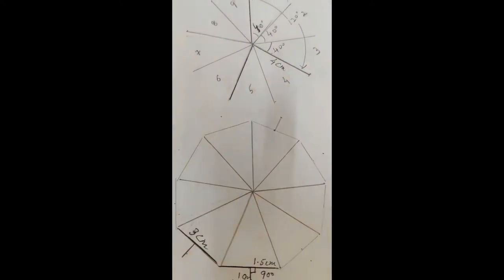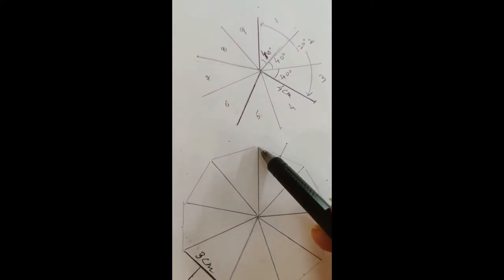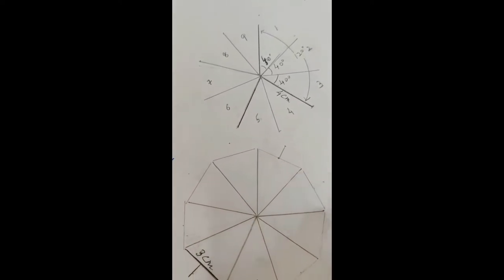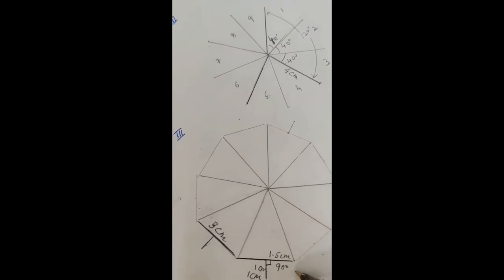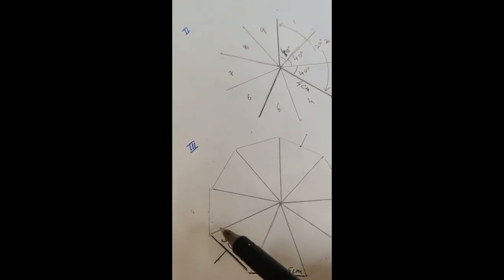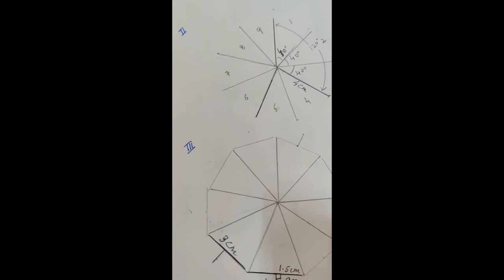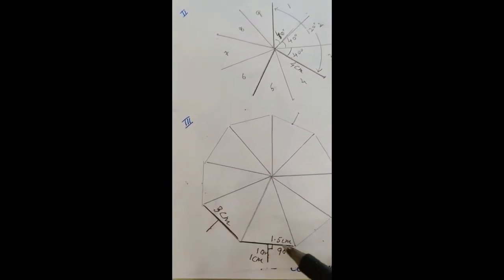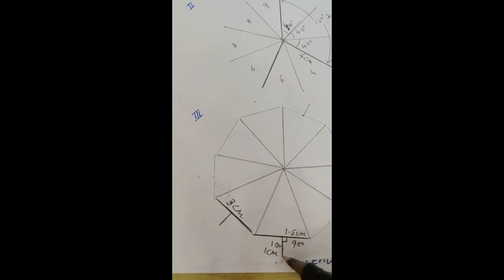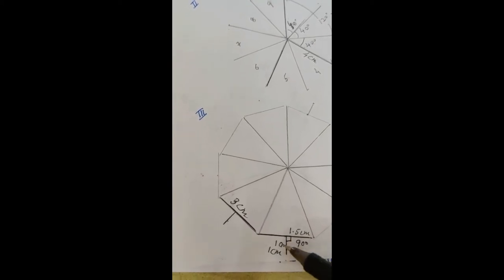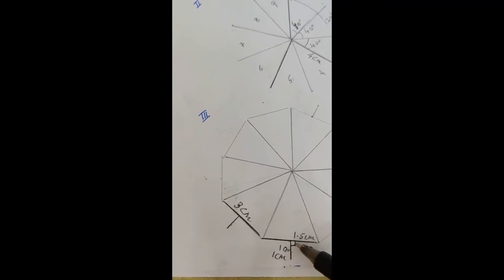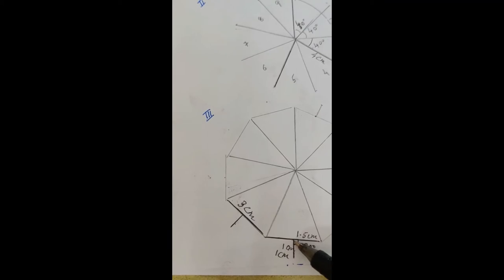Next step: now draw lines joining the adjacent radii. Okay, comes roughly 3 centimeter. Now take the mid part of 3 centimeter which is 1.5 and make a right angle on it. You can take 1 centimeter long line. So 90 angle on the midpoint of this line and 1 centimeter.